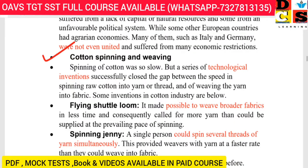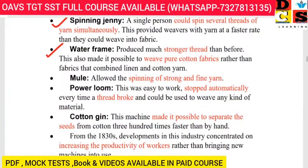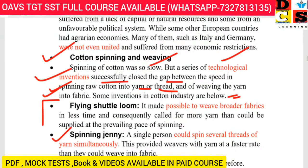Let's look at cotton spinning and weaving. Spinning of cotton was slow, but a series of technical inventions successfully bridged the gap between the speed of spinning raw cotton into yarn or thread and weaving it into fabric. The flying shuttle loom made it possible to weave broader fabrics in less time and consequently called for more yarn than could be supplied at the prevailing pace of spinning. The spinning jenny allowed a single person to spin several threads of yarn simultaneously, providing weavers with yarn at a faster rate than they could weave into fabric.